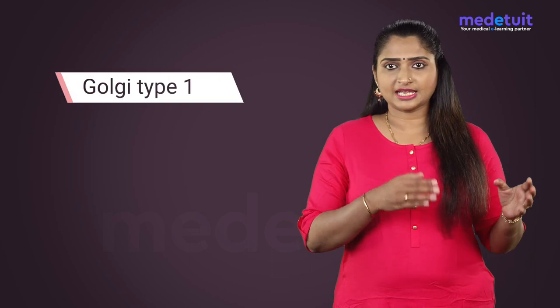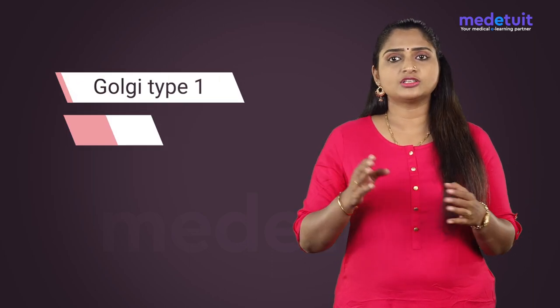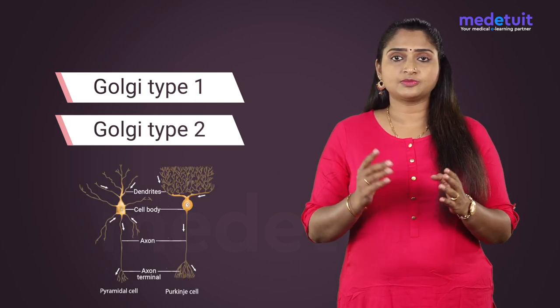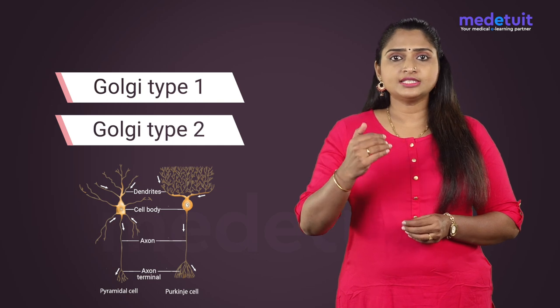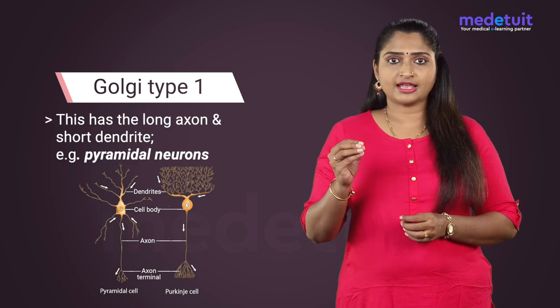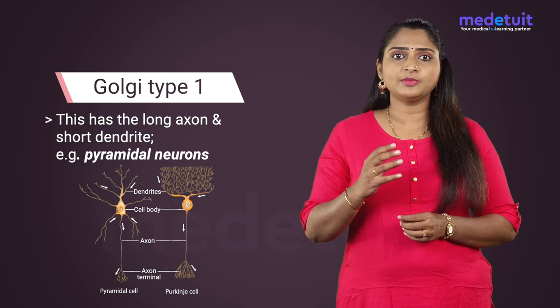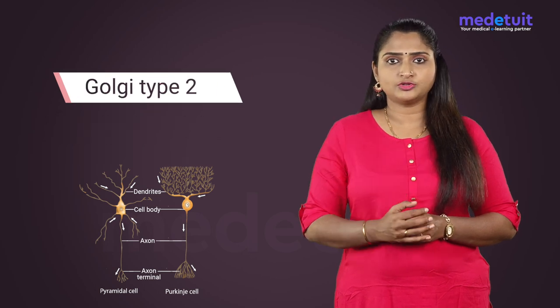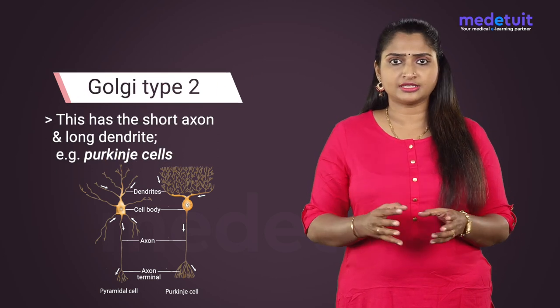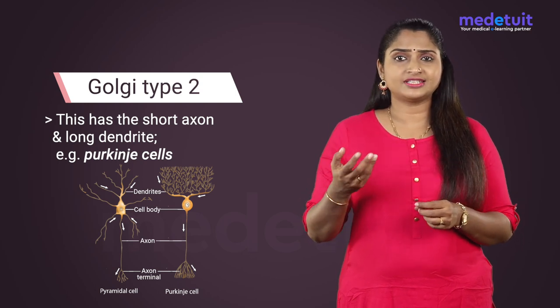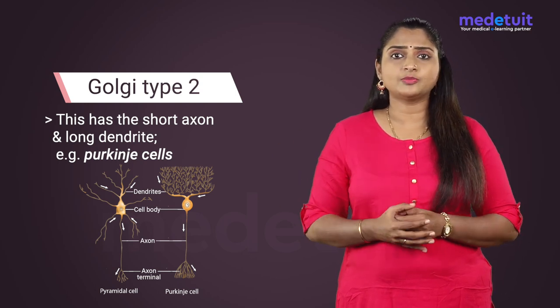Depending on the relative lengths of the axons and dendrites, neurons are classified into Golgi type 1 and Golgi type 2. You can visualize that in the image being displayed here. Golgi type 1 has a long axon and short dendrites; the example is the pyramidal neurons. Golgi type 2 has a short axon and long dendrites; the example is the Purkinje cells. Kindly appreciate the dendritic tree that is present on the Purkinje cells.